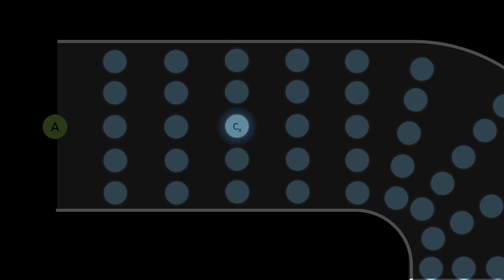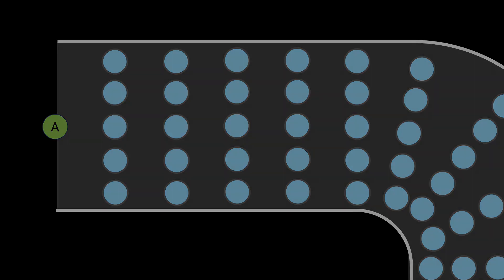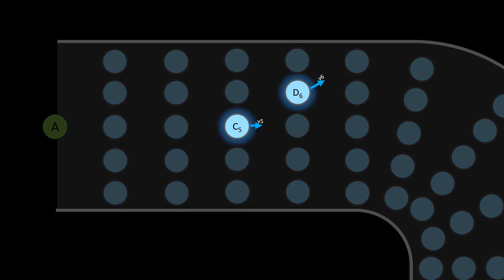Let us focus on one position, Cx. At this position the car's position is fixed. We know its x coordinate and y coordinate. However it can have any velocity vector. So one bubble you are observing here is actually corresponding to multiple states corresponding to all the possible velocity vectors. Let us focus on two states, C5 and D6. C5 has a velocity vector v5 pointing along the straight. D6 has a velocity vector pointing slightly upwards.